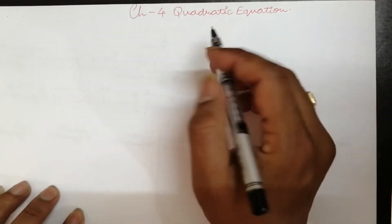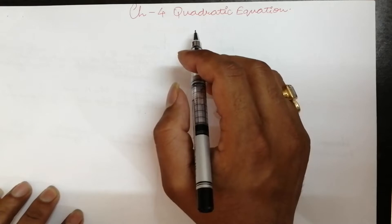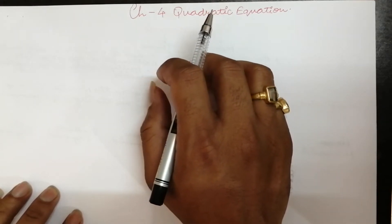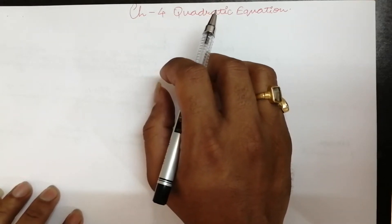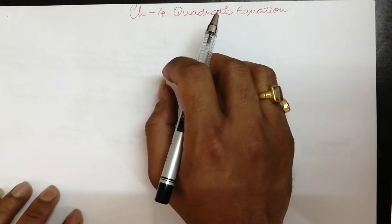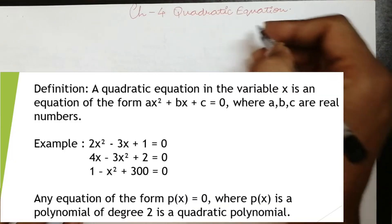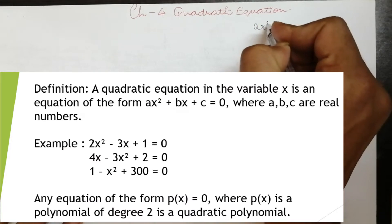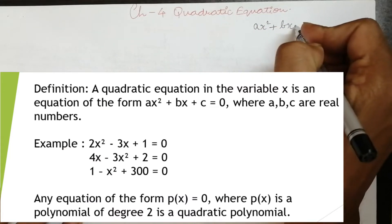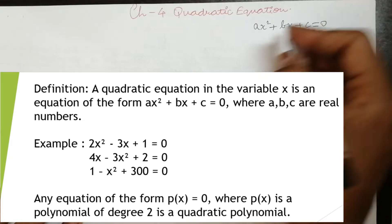Our new topic is quadratic equations. First we will see the definition of quadratic equation. A quadratic equation in the variable x is an equation of the form ax² + bx + c = 0.